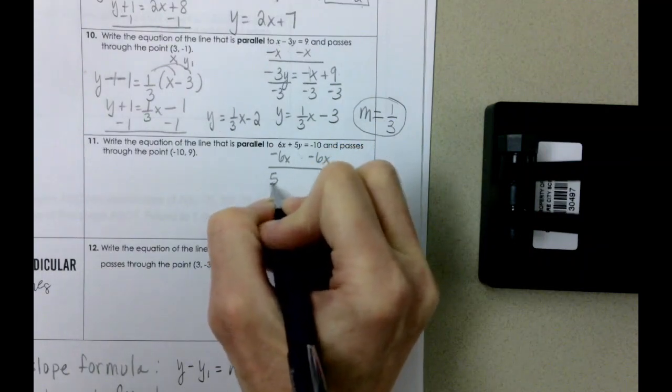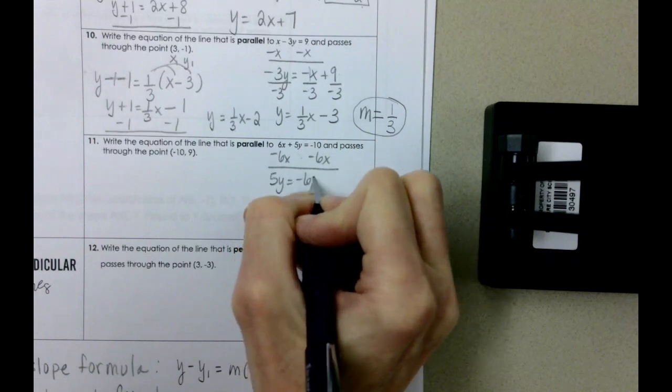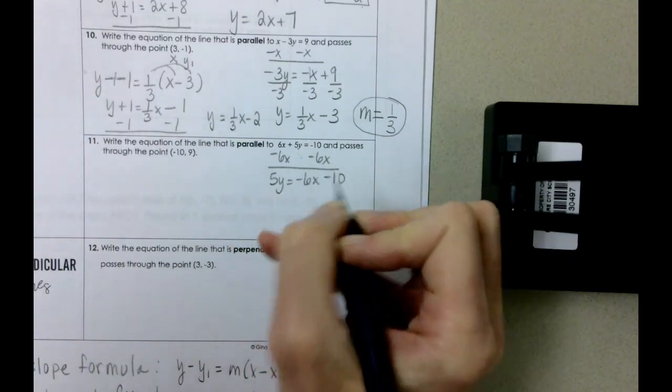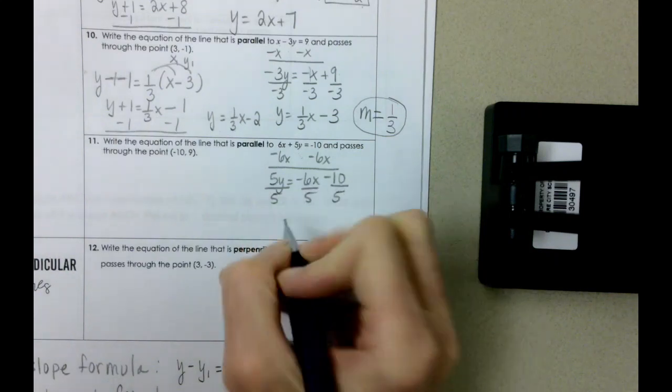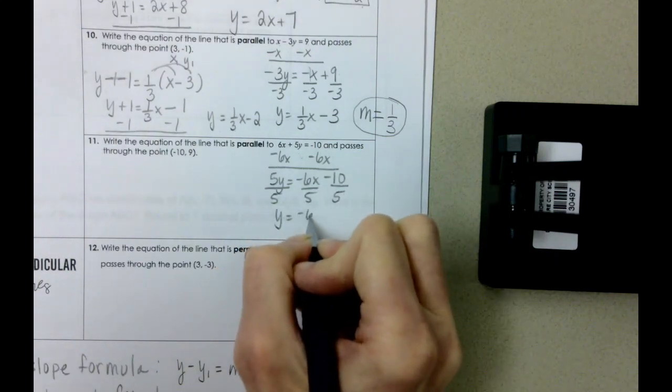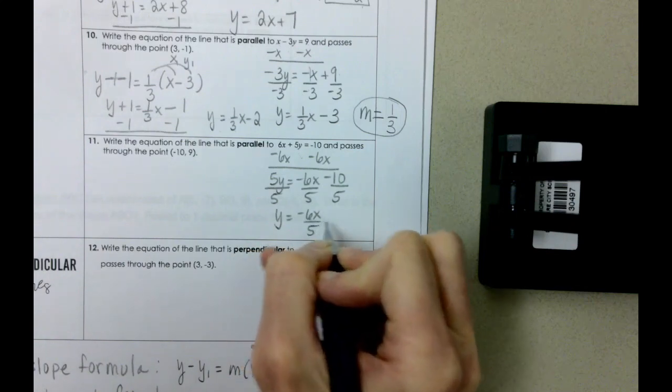We get 5y equals negative 6x minus 10. Divide everything by 5. And we get y equals negative 6x over 5 minus 2.